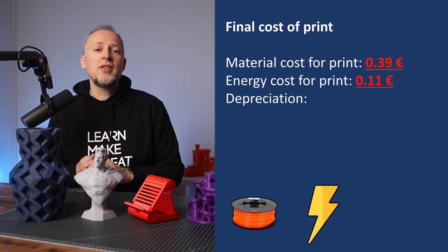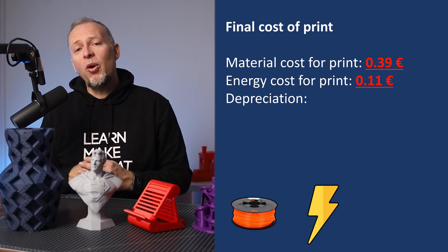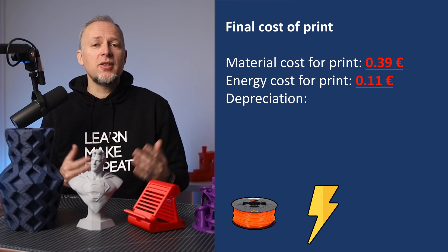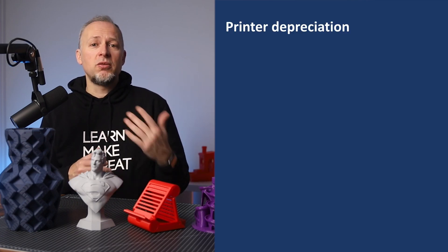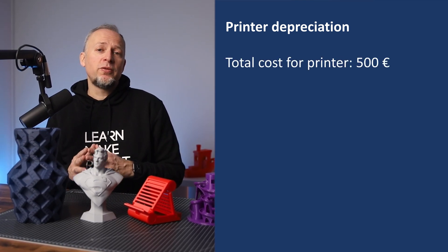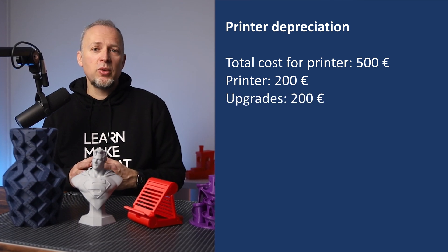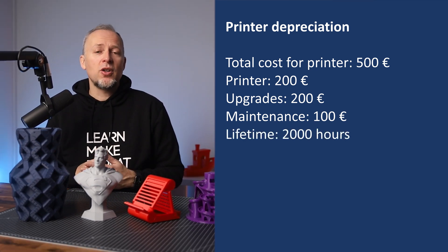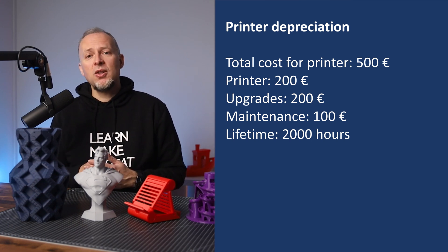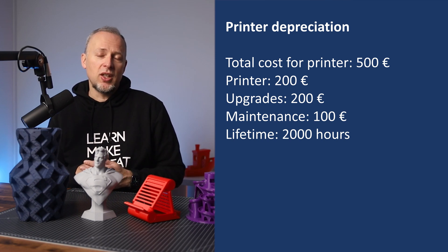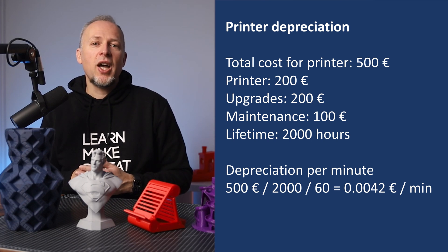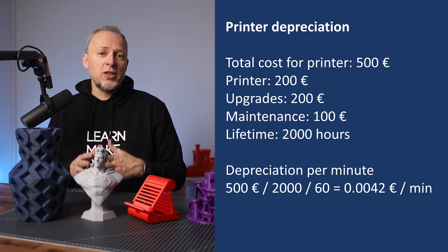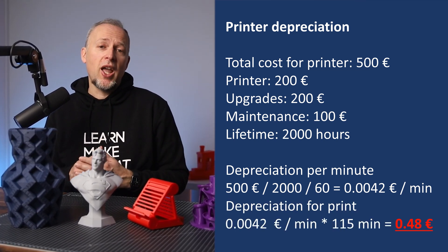Another factor you should add to the calculation is the depreciation of your printer. Why? Because at some point the printer will stop working, will be broken, or will need some serious repairs. So we should make an assumption about how long it will last, and from that derive what a minute of printing will cost. Let's assume the printer costs overall 500 euros — that's 200 for the printer, 200 for upgrades, and 100 euro for maintenance material during its lifetime. We'll assume the lifetime of this printer is 2000 hours of active usage. So 500 euro divided by 2000 hours, then divided by 60 minutes, means this device loses 0.004 euro of value per minute. Multiply that by 115 minutes and we'll have 0.48 euro of depreciation.